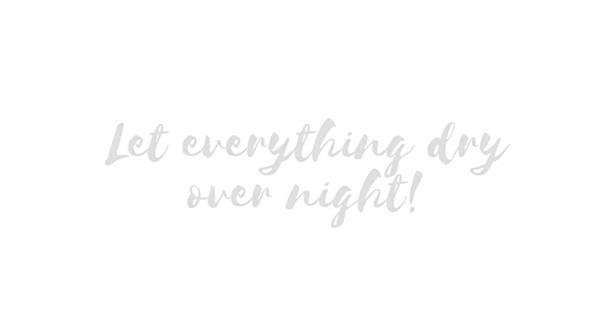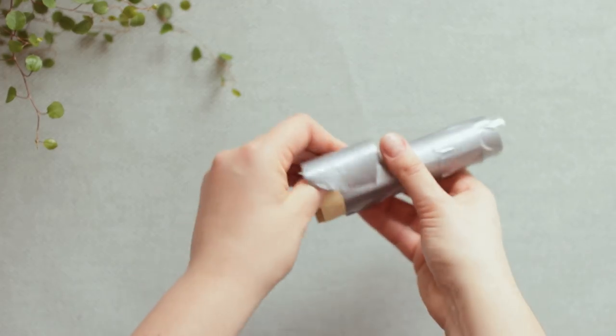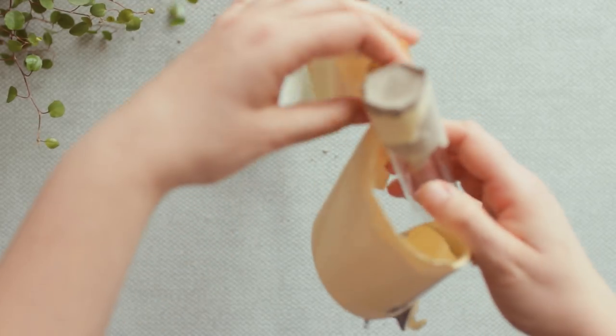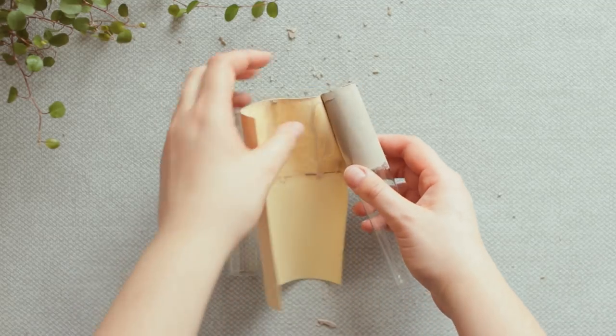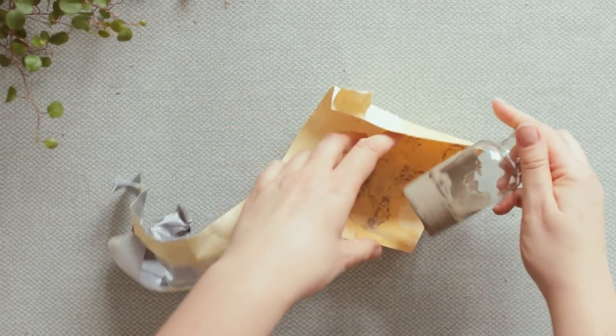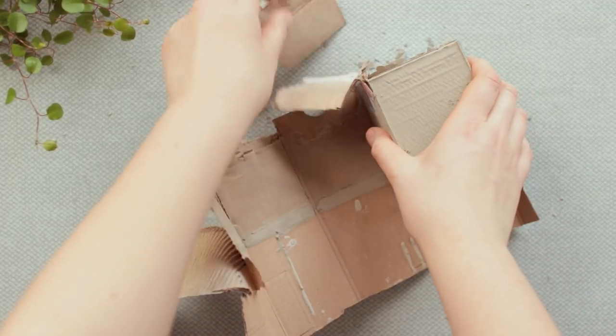I'll let everything cure overnight and then carefully remove the cardboard. Do this very carefully because concrete needs up to 24 hours to completely harden and you never know if you accidentally push something too hard and break something.